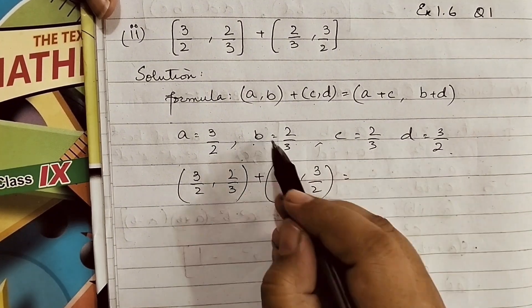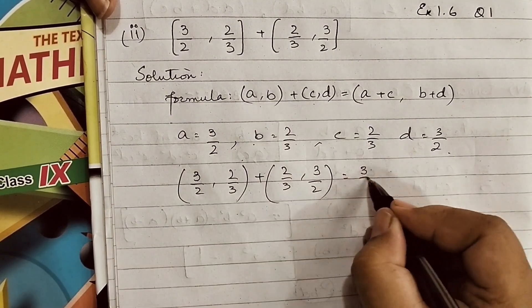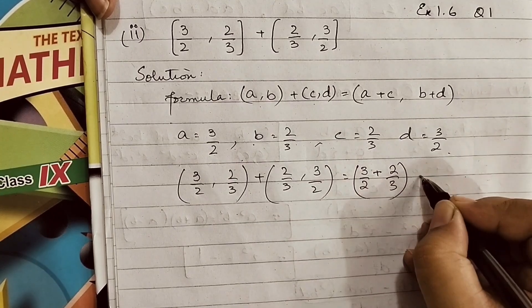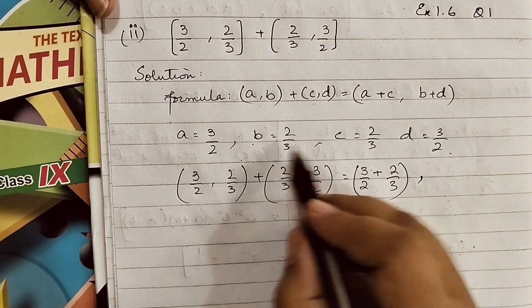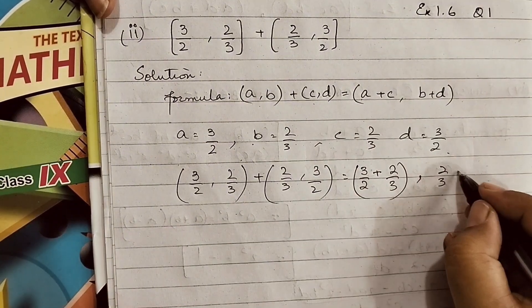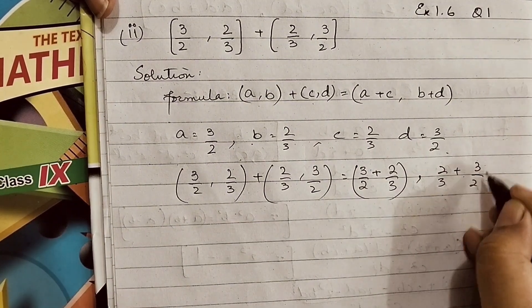now, in place of a we put 3/2, in place of c we put 2/3, comma will come, in place of b we get 2/3, plus in place of d we get 3/2. Now,